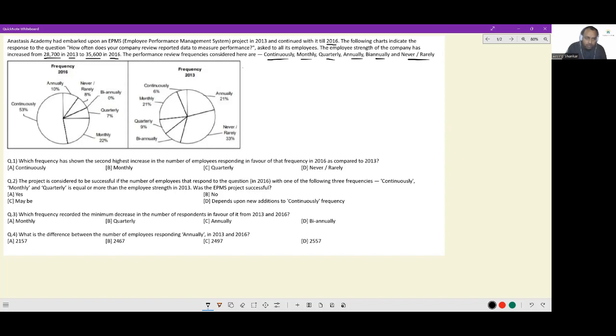First question, which frequency has shown the second highest increase? Second highest increase in the number of employees responding in favor of that frequency in 2016 as compared to 2013. So only percentage terms I am writing now. Let's say we have continuously, we have monthly, we have quarterly, we have annually, we have biannually and we have never really.